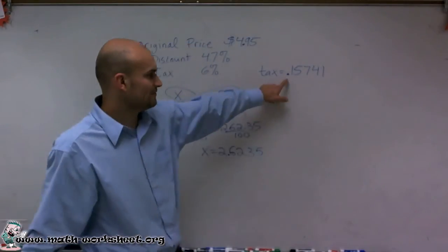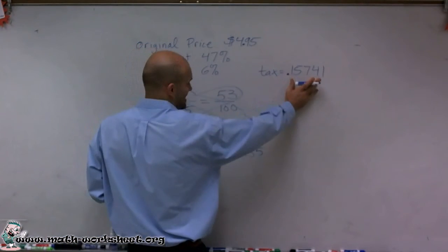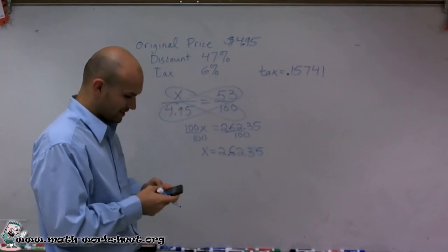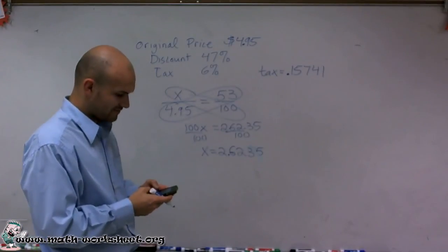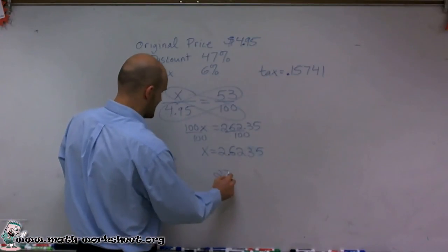So it's roughly 15 cents, but we're going to carry that 7 because as I add the amount of tax onto my discounted price, what I have is 2.6235 plus the tax, and I get a final value of $2.78.